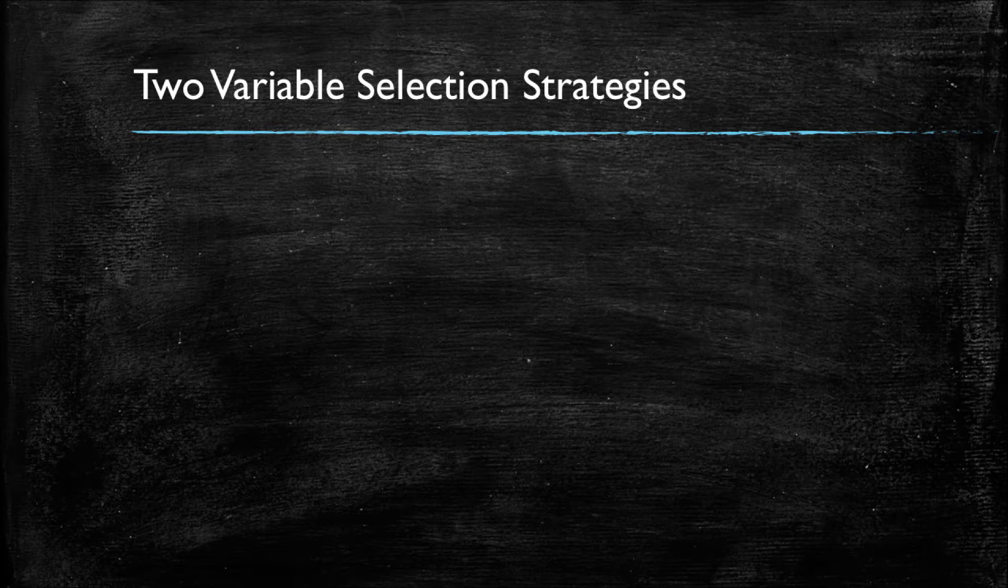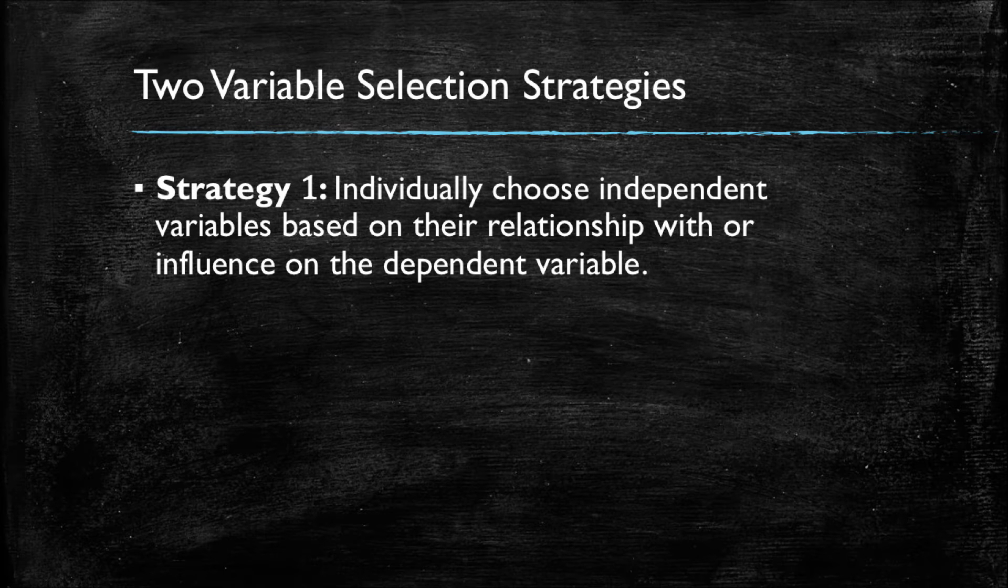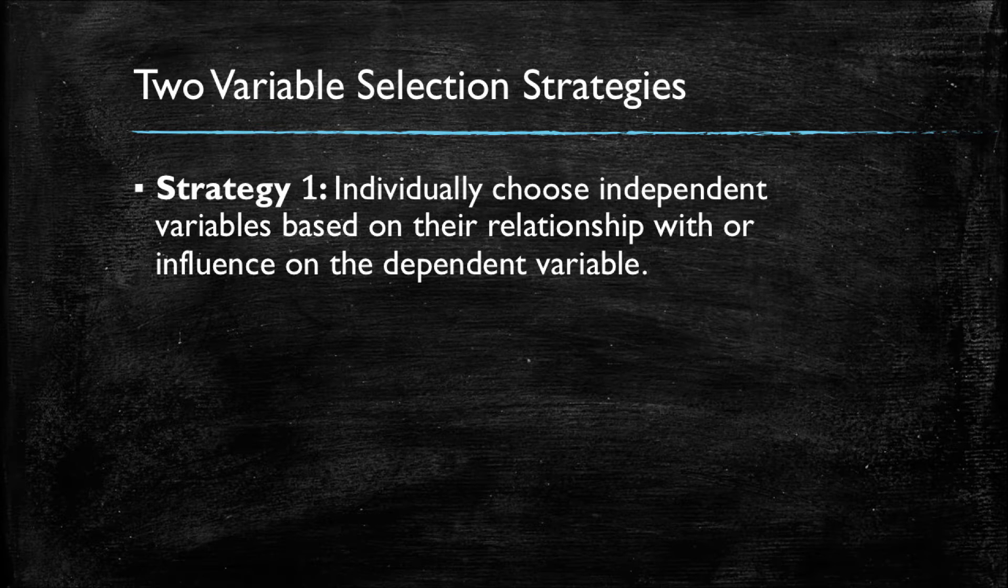There are two potential strategies we can use to approach the issue of selecting variables. The first one, which is fairly intuitive, is to check if each individual independent variable has a statistically significant relationship with the dependent variable, with the y. So basically, we are checking if each individual x has a positive or negative relation, but a strong relationship with the y in the model.